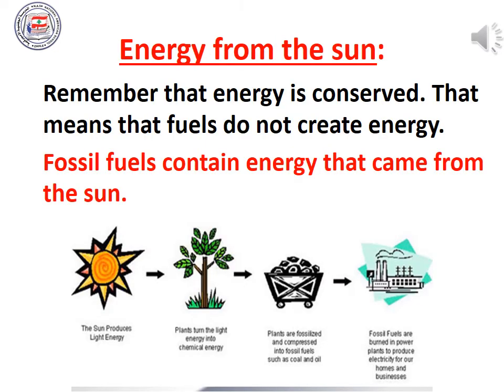Remember that energy is conserved, as we stated and explained in the previous session. Energy is neither created nor destroyed. This means that fossil fuels do not create energy, but they contain energy. Where did it come from? Fossil fuels contain energy that came from the sun. The sun produces light energy, and plants turn this light energy into chemical energy stored inside of them. These plants, here hundreds of millions of years ago, were buried under thick layers of sand, silt, and water, and turned into fossil fuels that we use to take energy. So when we say fossil fuels contain energy that came from the sun, it is because plants contain energy from the sun and fossil fuels are made of ancient plants.